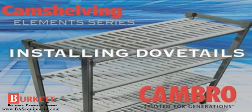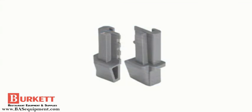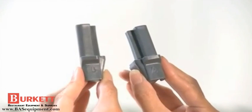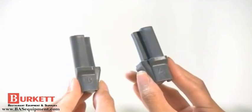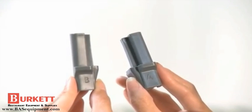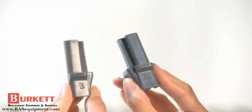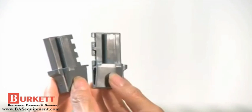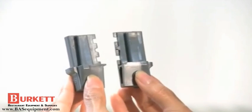Installing dovetails. Now that you have assembled your two post kits, it is time to install the stationary dovetails. Take a set of dovetails, one A and one B dovetail. The A dovetail is always in your right hand and the B dovetail is always in the left. You will notice how these connect together.